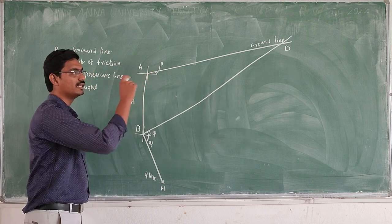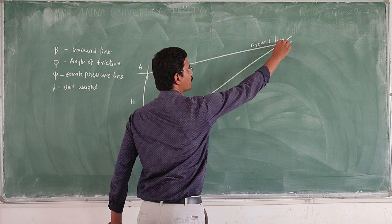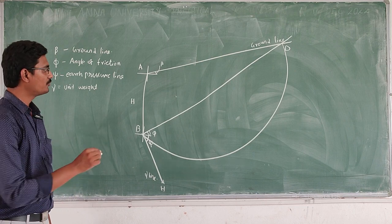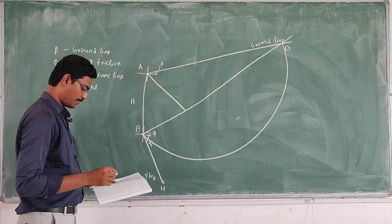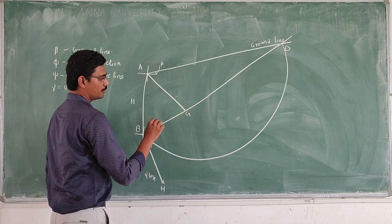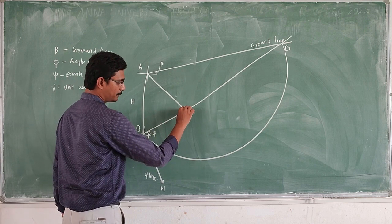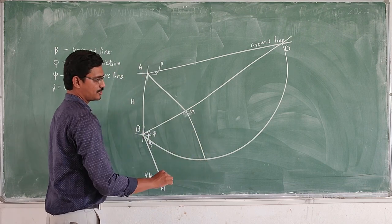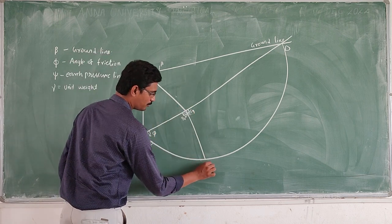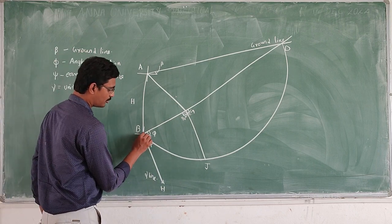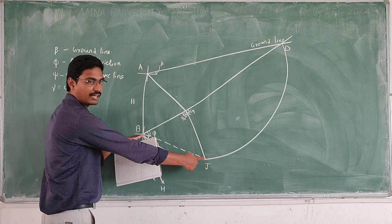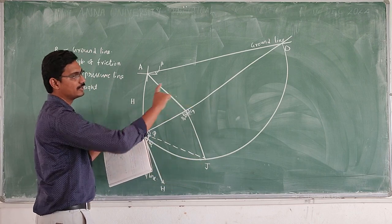Next, we take BD as the diameter and draw a semi-circle. After drawing the semi-circle, we draw line AG parallel to the psi line. From that, we draw a perpendicular line to meet the semi-circle — this perpendicular is 90 degrees, and here also 90 degrees. This intersection point is labeled J. After that, we draw the line BJ as a dotted line.